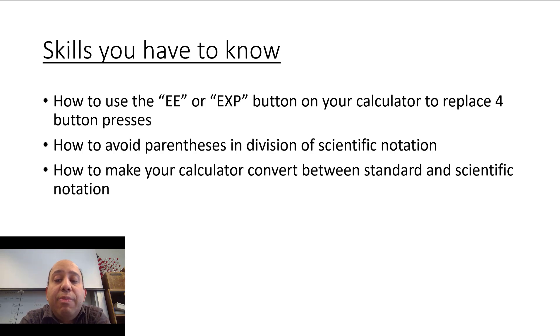How to use the EE or EXP button on your calculator to replace the four button presses. There's no times and one and zero and caret anymore. It's just EE button or EXP button. You want to avoid parentheses when you're dividing scientific notation because it's just extra button presses. But if you don't put the parentheses and you don't use the EE button, you're going to lead to the mistakes that we talked about. And then how to make a calculator convert between standard and scientific notation. And that's the first quiz of the second semester.